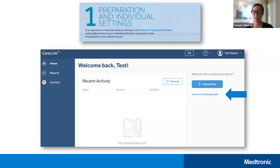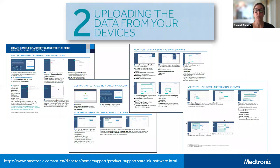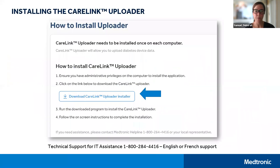Once you've done this, you are ready to install the uploader software. You'll see on your home page how to install the uploader. If you click on this, you will arrive at the place where you can download the uploader software. I'll refer you to the CareLink quick reference guide available on our support page, which will walk you through each of the screens. Click on download CareLink uploader installer and it'll walk you through all the prompts necessary. If you run into any problems, you can always call the Medtronic helpline at 1-800-284-4416. Representatives are available 24 hours a day, 7 days a week.